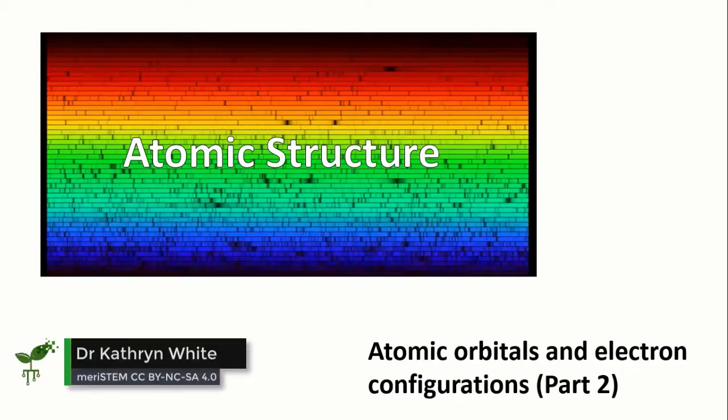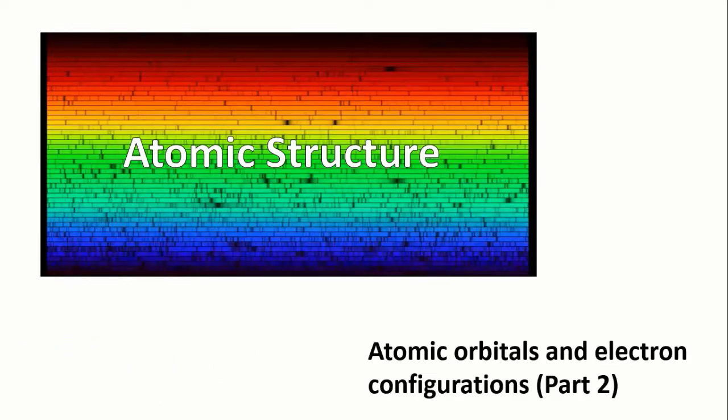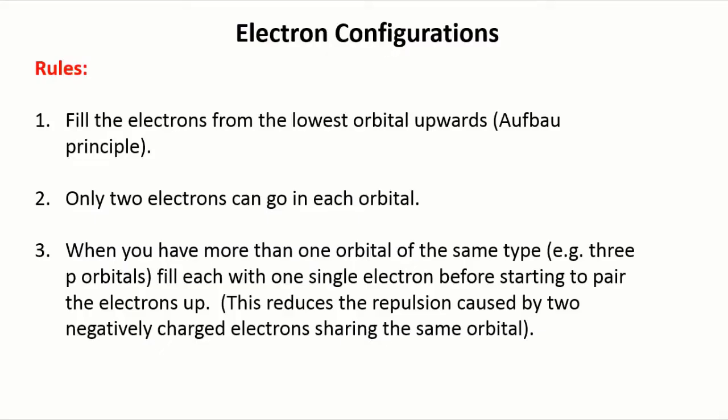In part two of this lecture we'll learn how to write electron configurations using Schrödinger's orbitals rather than Bohr's orbits. So with this complicated series of orbitals from Schrödinger's model, how do we go about writing electron configurations? It's actually not hard at all.